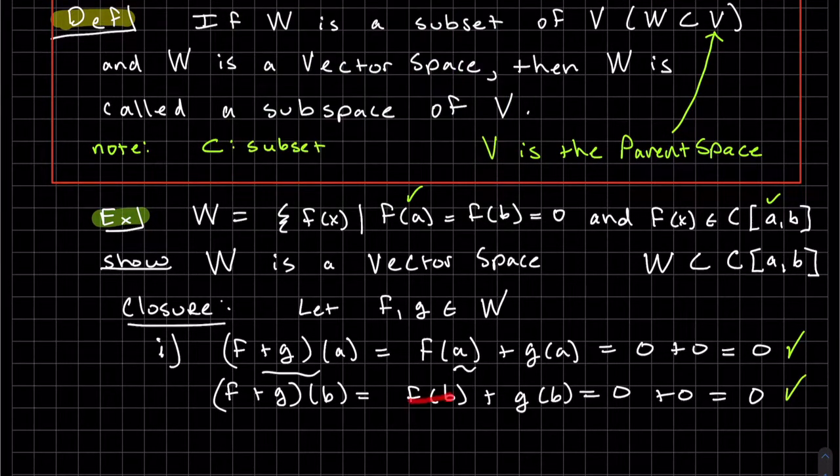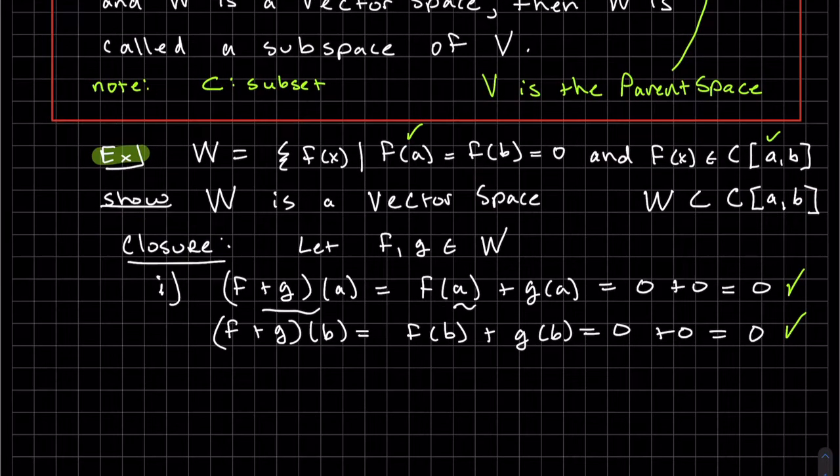Again, this is given to be 0. This is given to be 0 because it's in the set W. They were both given to be in W. Therefore, the sum is 0. So it is closed under addition since F plus G is an element of W.